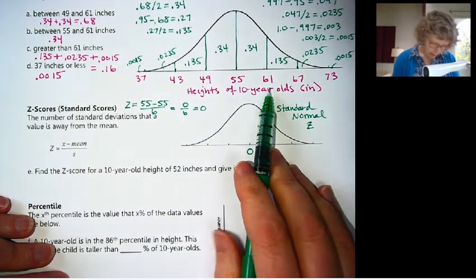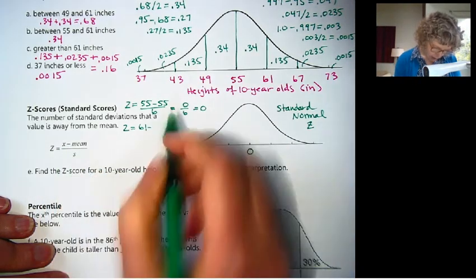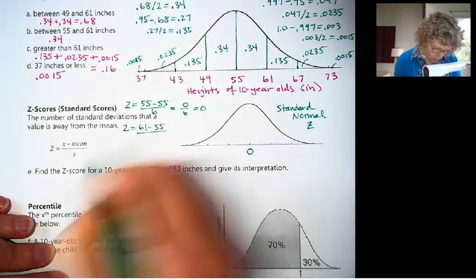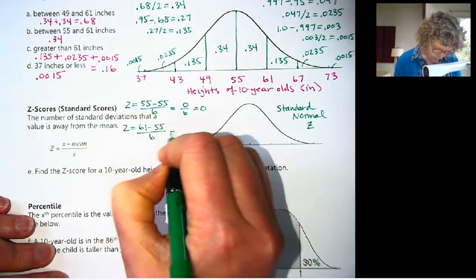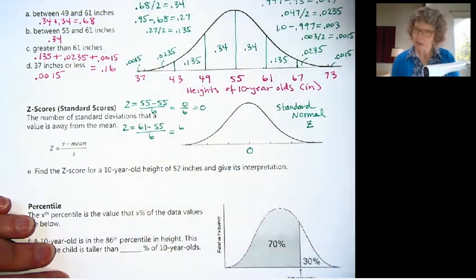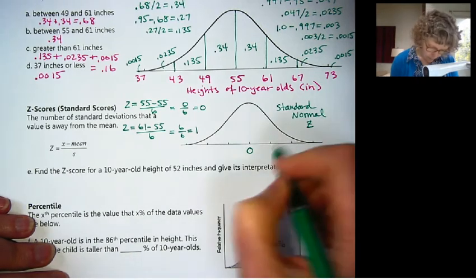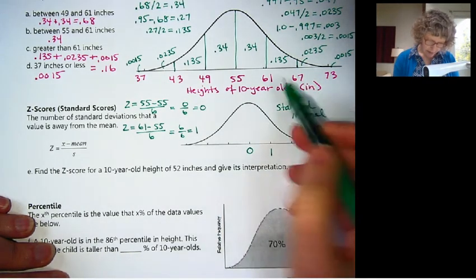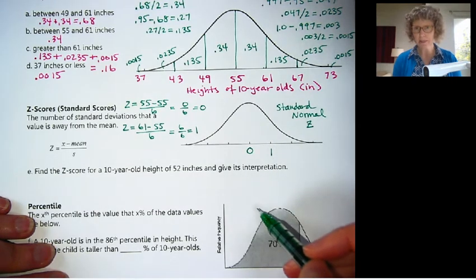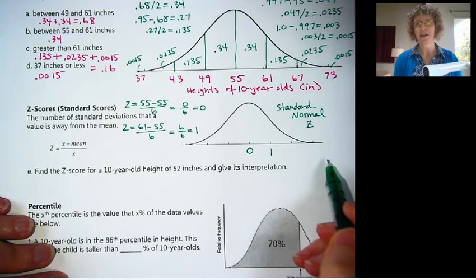Okay, so the mean is now, see how it turned into 0? Because we subtracted the mean from it. Let's try 61. Let's find the z-score for 61. We take the value minus the mean, which is 55, over the standard deviation, which is 6. Okay, 61 minus 55, that is 6 away because it is one standard deviation away. So we get 6 over 6, which is 1.